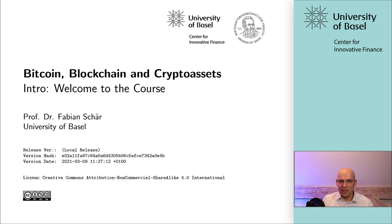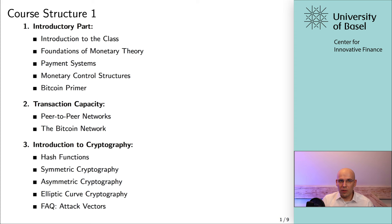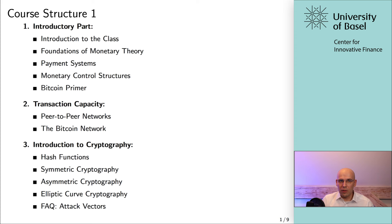The course consists of seven sections, each of which will contain multiple videos and various resources. Section one starts quite slow and easy. We will look into the characteristics and foundations of money, briefly talk about payment systems, and wrap up with the first very high-level overview of Bitcoin. The idea is that this section serves as a first primer and a general introduction.